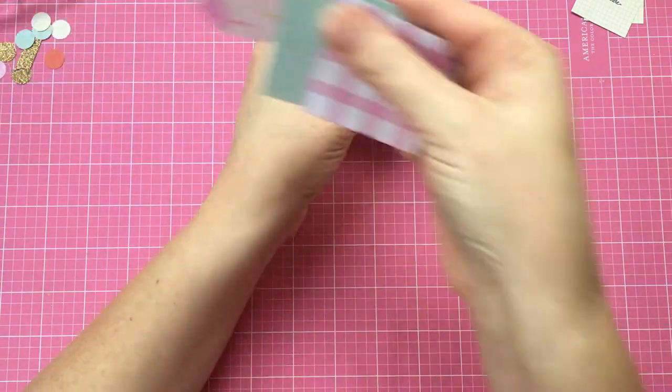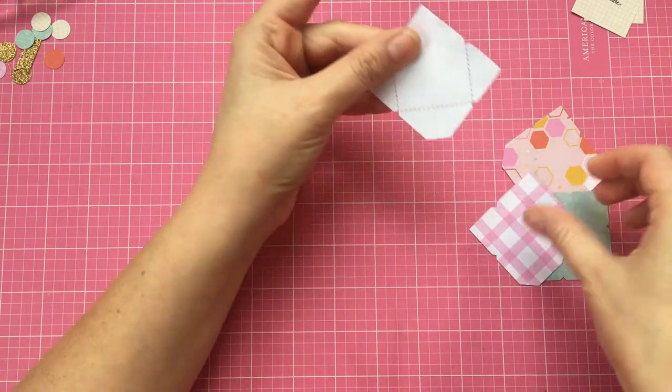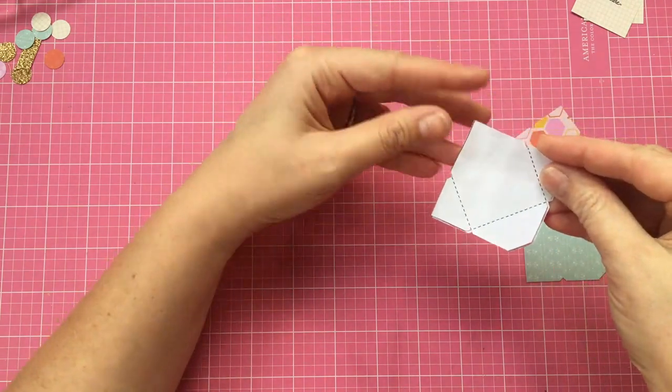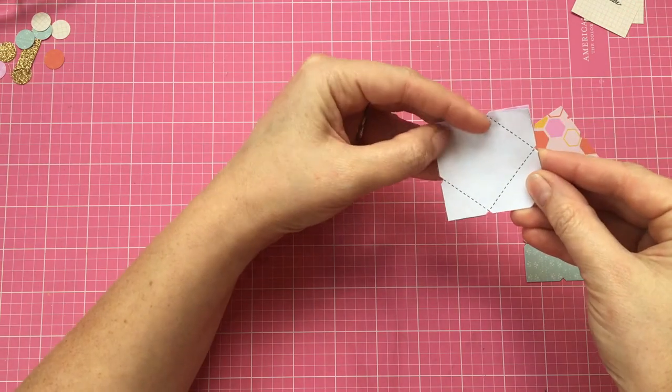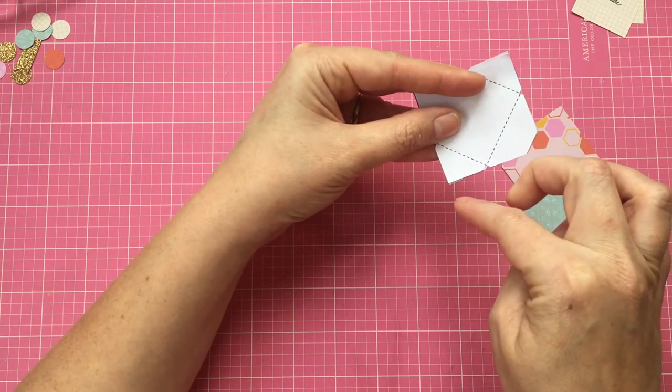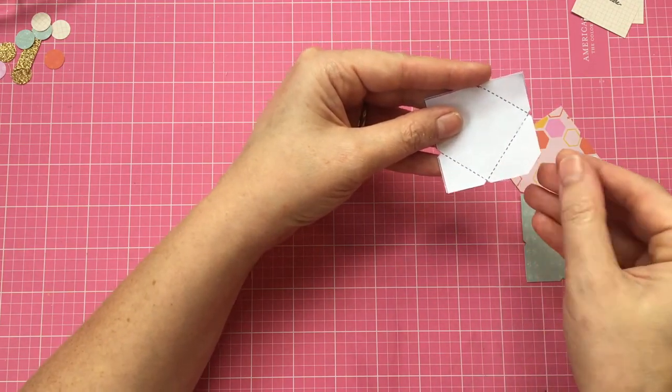So I pre-cut a few of them here, and all I do is I put this piece of paper against the corner or the edge of a piece of scrapbooking paper or whatever kind of paper you want to use and just cut it out. It's really simple, there's just four little notches, one on each side, and then you just take this off.